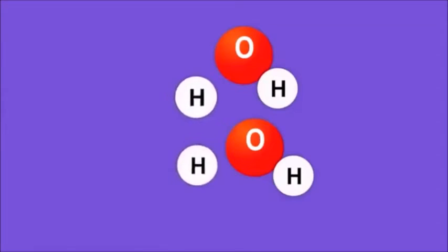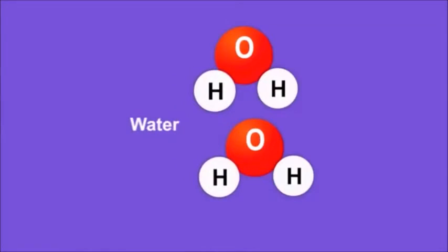molecular hydrogen can convert toxic oxygen radicals to water. It is the smallest molecule, smaller than oxygen, and can easily and quickly enter the cells and mitochondria better than any other antioxidant. Number two,